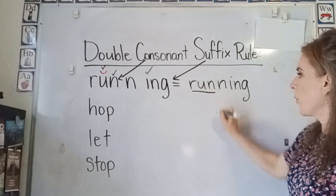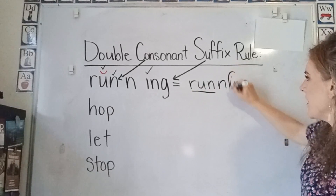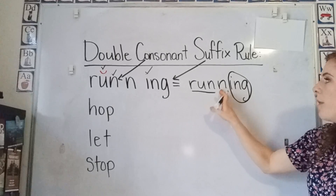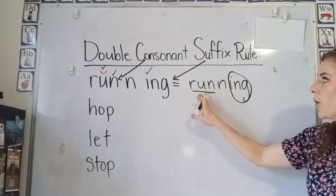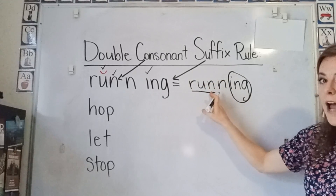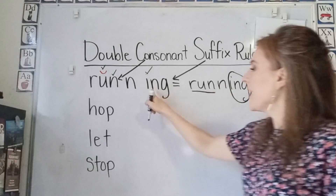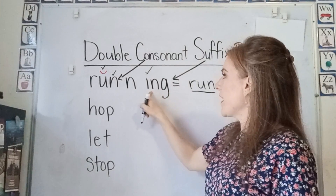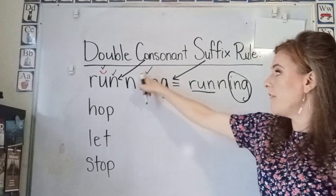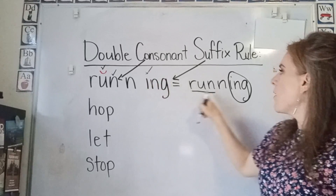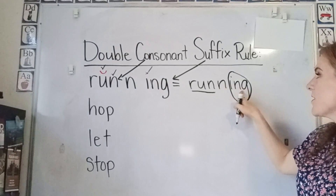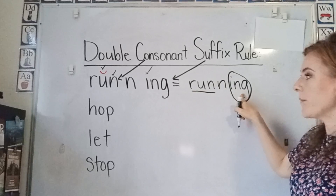This is our root word. This is our suffix. We do not underline this because this is not part of our root word. Our root word is just run. But when you're adding a suffix with a vowel in the beginning, we double our consonant to make the new word running.